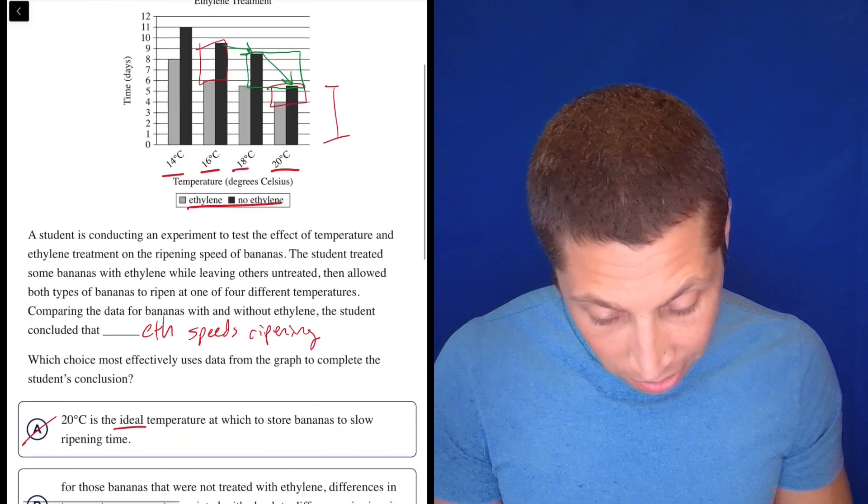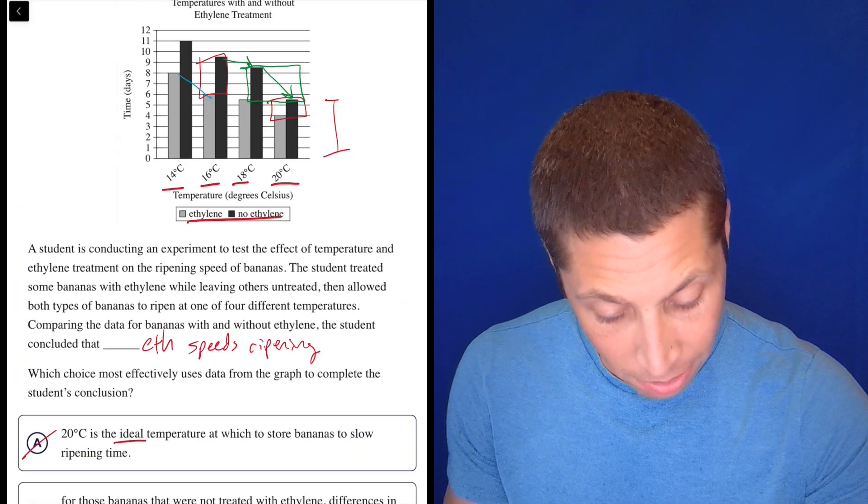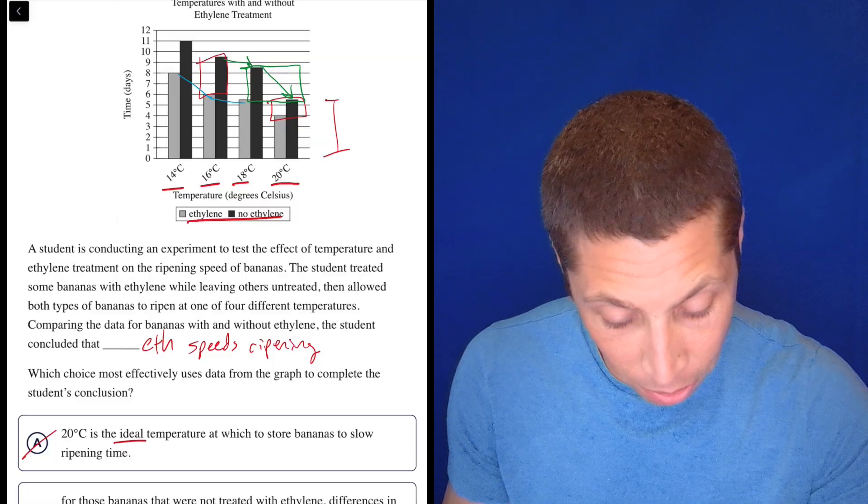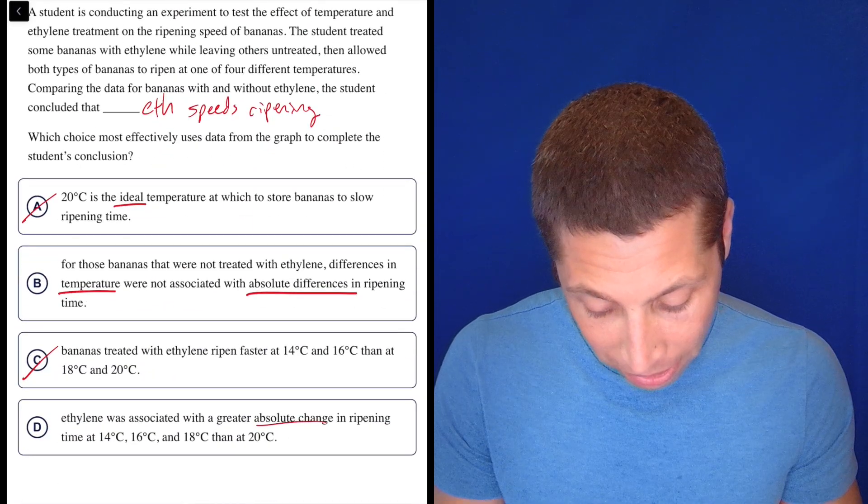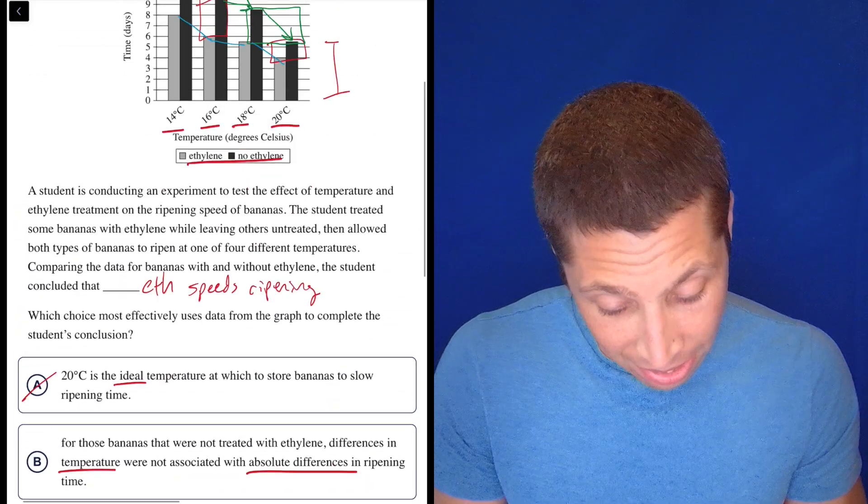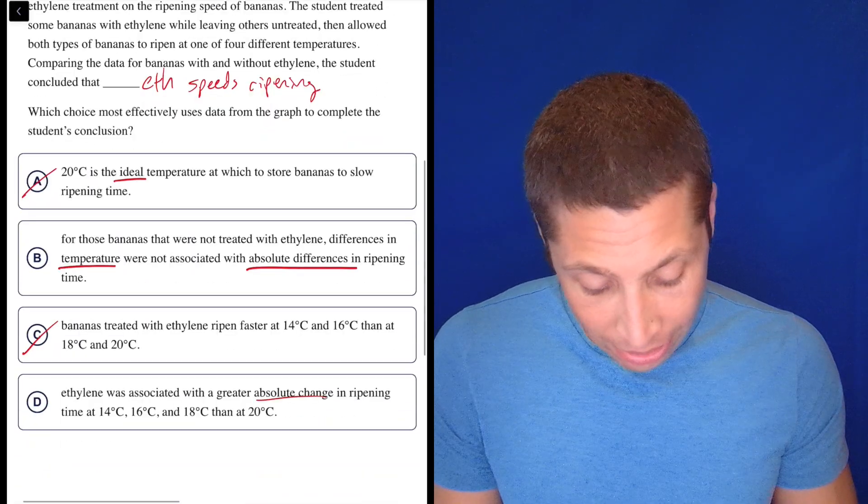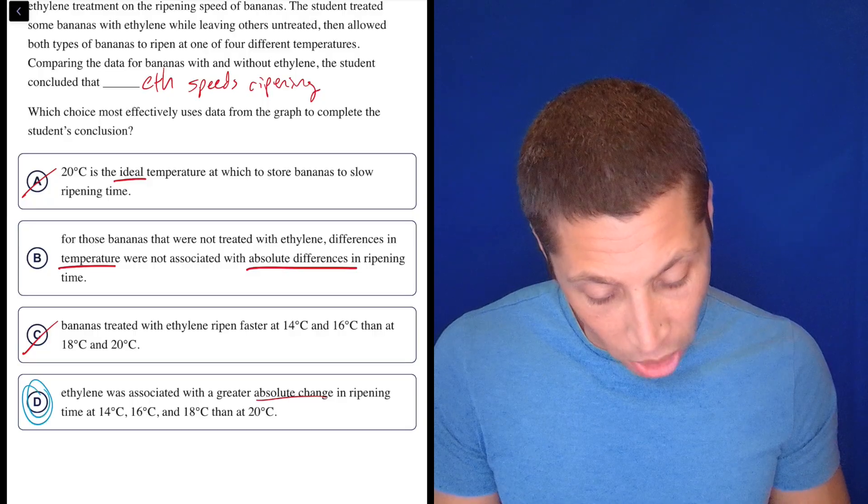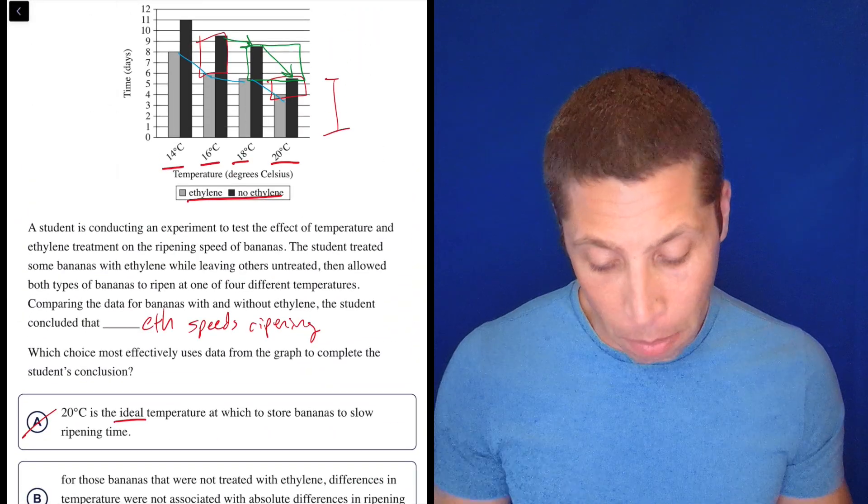And so if I did the same thing with the gray bars, right, so that's getting back to D. The change from 14 to 16, right? That's just like slope. So that's kind of, I don't know, those are kind of low. And then this one's kind of big, with a greater absolute change in ripening time at 14, 16, 18, then at 20. Now it seems like it's not true, but it's definitely D. I think it's probably the absolute change has to do with the difference between the black bar and the gray bar, but I don't know. This seems very odd.